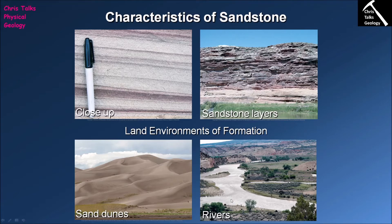In the case of rivers, sands won't be forming on the floodplain — that environment is dominated by muds, so silt and clay-size clasts. The sand is actually going to be present in the channel itself. We're going to look for sedimentary features that show unidirectional flow, such as asymmetrical ripples, which tell us the transporting medium was moving in just one direction, exactly what you would expect in a river.